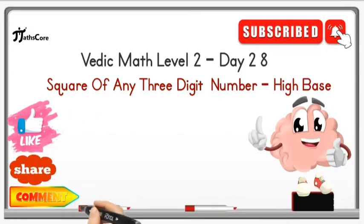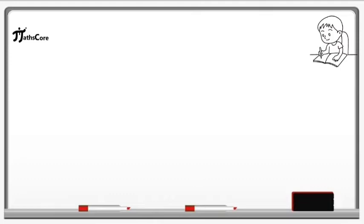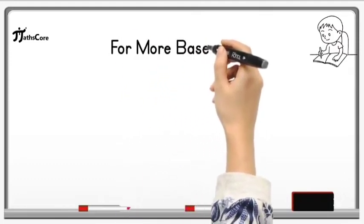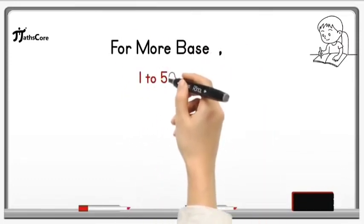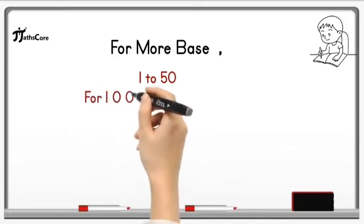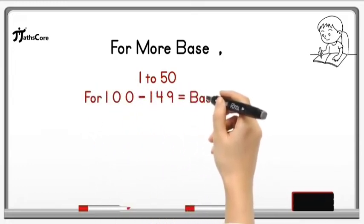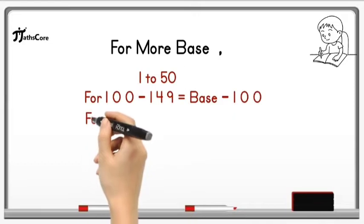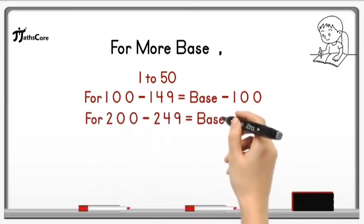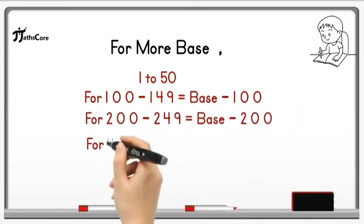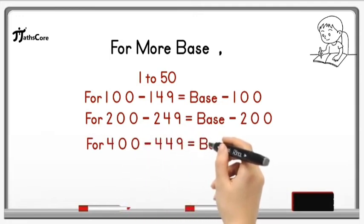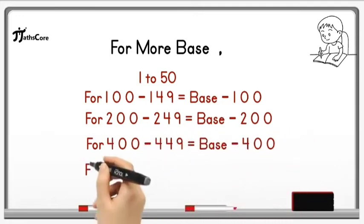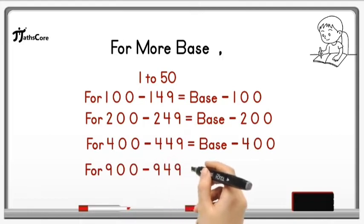To find out square for numbers 1 to 50, it is easy to take more base. Just like for number 100 to 149, we take base as 100. For number 200 to 249, we take base as 200. For number 400 to 449, we take base as 400, and for 900 to 949, we take base as 900. Similarly, you can take more base for any number.